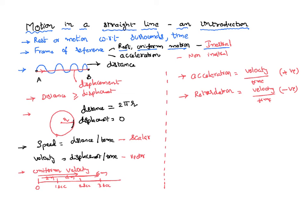When there is a change in velocity, either in the form of acceleration or retardation, the velocity of a body changes, and we need to find out an average velocity. We can simply define average velocity as the total displacement covered by a body divided by the total time. In the further post, we are going to discuss how to find out the average velocity. Thank you, see you back.